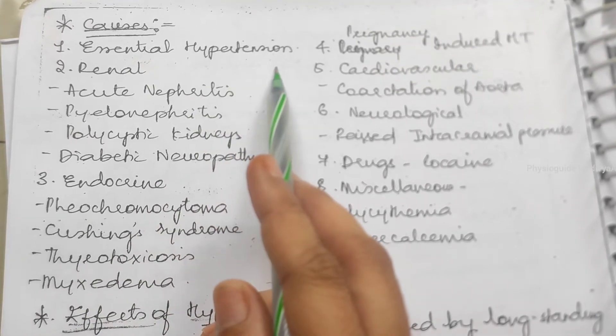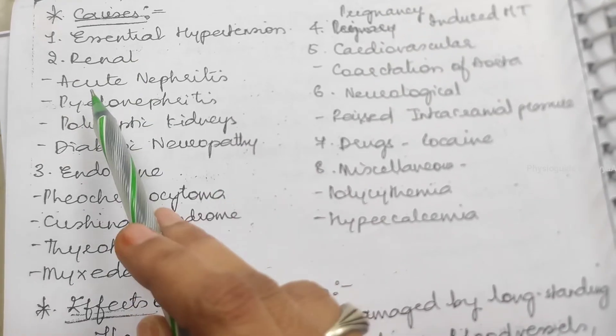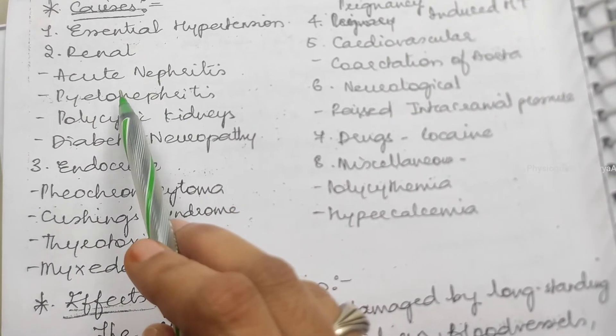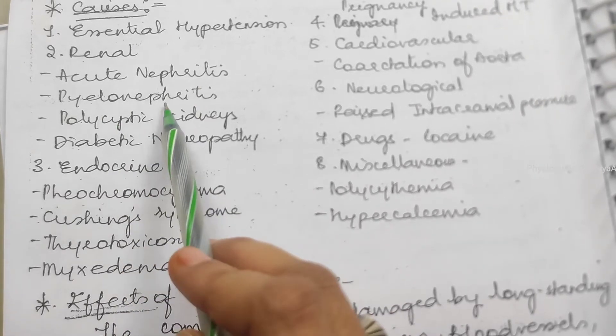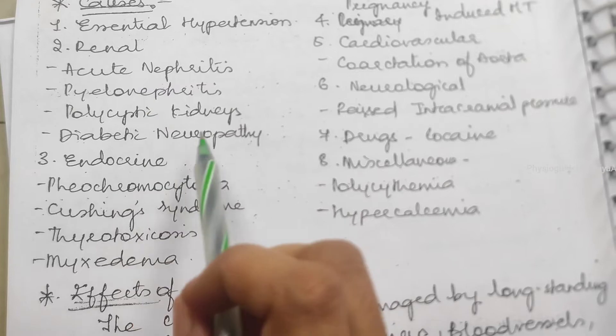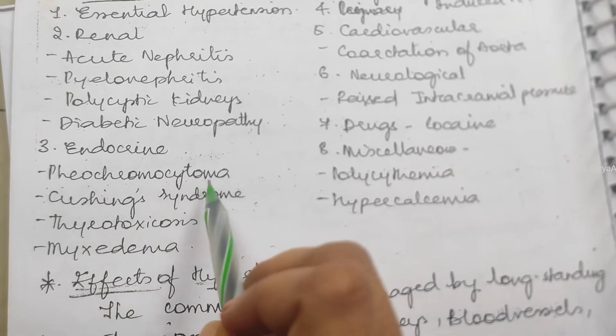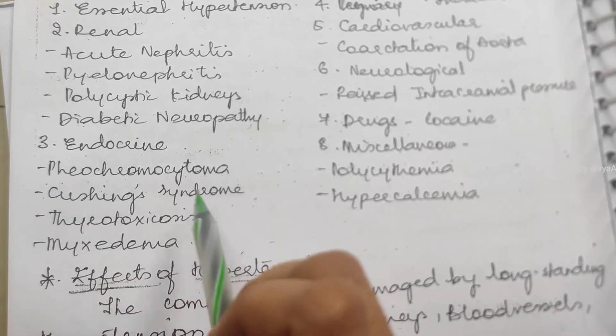Normal essential hypertension, primarily. Extra due to renal kidney damage, like acute nephritis, pyelonephritis, polycystic kidneys, diabetic neuropathy. Due to this also hypertension occurs.